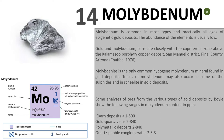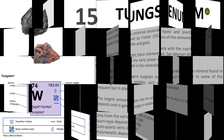Number fourteen is molybdenum. Molybdenum is common in most types and practically all ages of epigenetic gold deposits. The abundance of this element is usually very low. Molybdenite is the only common hypogene molybdenum mineral found in gold deposits. Analysis of ore from various deposit types shows: skarn deposits range 1 to 500 ppm; gold quartz veins 2 to 840 ppm; polymetallic 2 to 840 ppm; and Witwatersrand conglomerates 2 to 5.3 ppm.